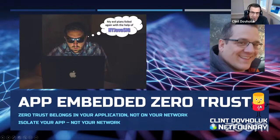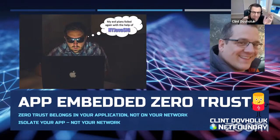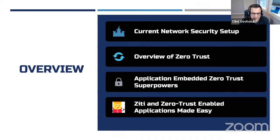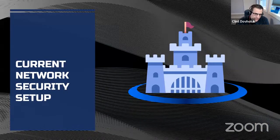That fellow in the lower right-hand corner is Ziggy — he's our mascot. Every open source project absolutely has to have a mascot, and that's ours. We're going to talk about the current network security setup, what it looks like to consider yourself relatively secure, do an overview of Zero Trust, and discuss how adding an SDK into your application that provides Zero Trust principles is going to give your application superpowers.